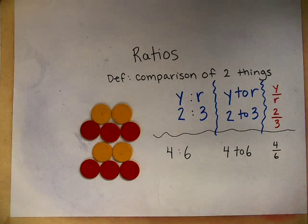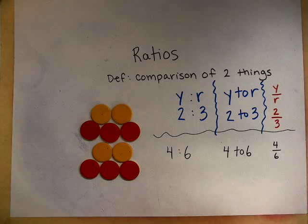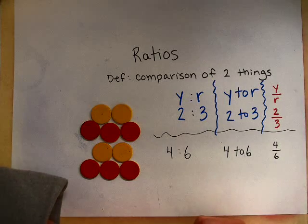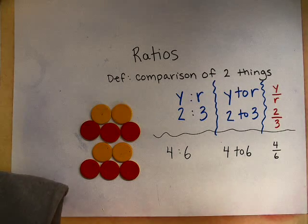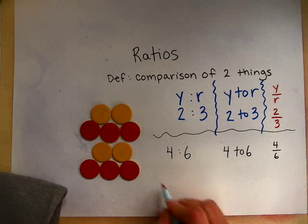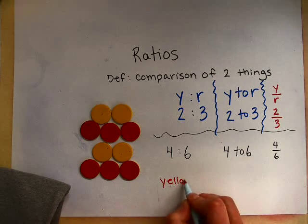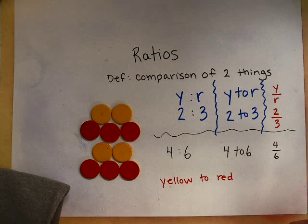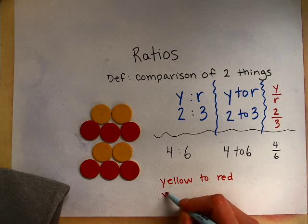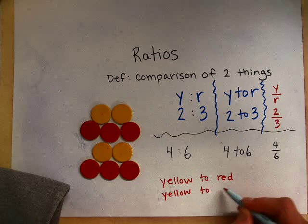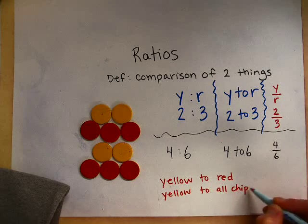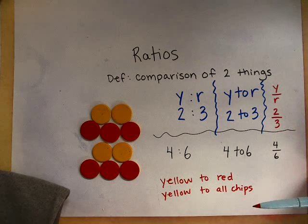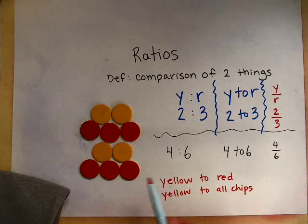Now I don't want to make this video too long, but there's one more thing I want to tell you about ratios and why they're not exactly like fractions. So with a ratio, you can have part to part—yellow to red—or you can have part to whole, which would be yellow to all chips. With fractions, you're always a part out of the whole.